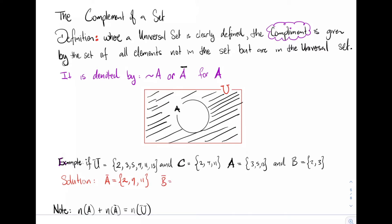Let's write down the complement for B — that would be 5, 7, 11, and 13, all elements not in B but still in the universal set. Likewise, the complement of C is given by 3, 5, 13. An important note: when I add the elements in A to the elements in its complement, I should end up with the number of elements in the universal set. This is a rule of thumb to help guide us as we write down our complements.